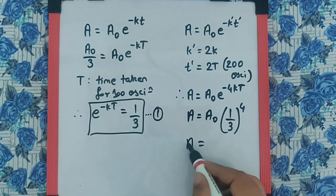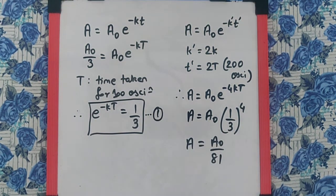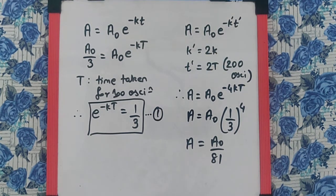So that makes amplitude to be equal to A₀ by 81. Now, they do not want the new amplitude, they want the change in amplitude.